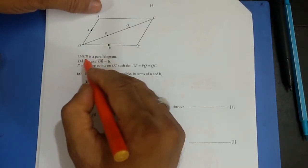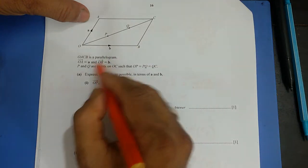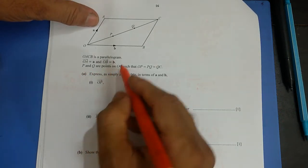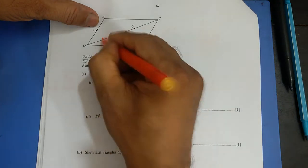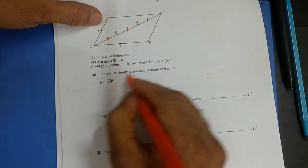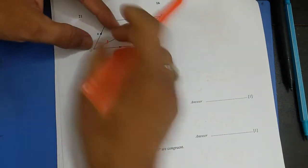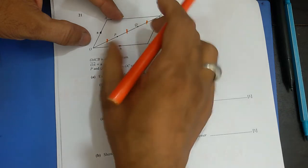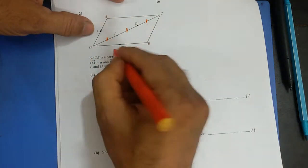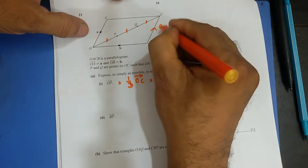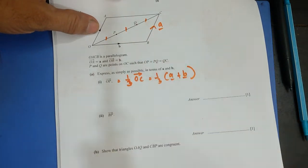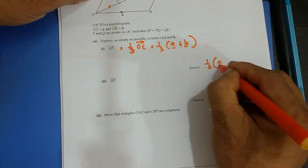Next question: OACB is a parallelogram. OA equals vector a, OB equals vector b. P and Q are points on OC such that OP, PQ, and QC are equal — so OC is cut into three equal parts. Express as simply as possible in terms of a and b: OP and BP. Since OC equals a + b in the parallelogram, OP equals one-third of OC, which is 1/3(a + b). For BP: going from B to O then O to P, that's −OB + OP, which gives −b + 1/3(a + b) = 1/3 a − 2/3 b.